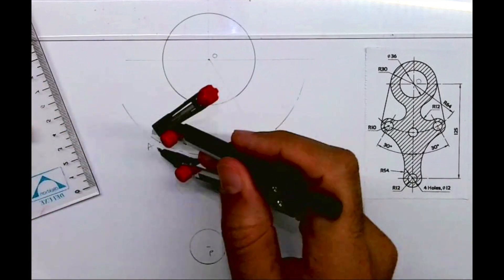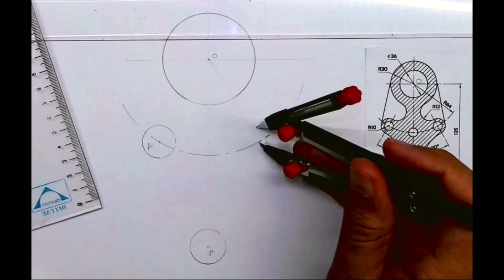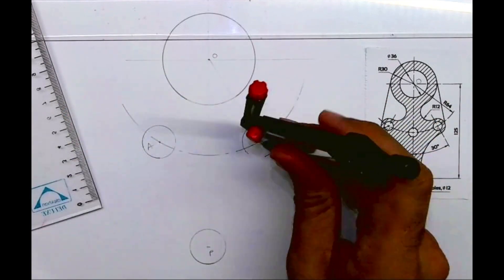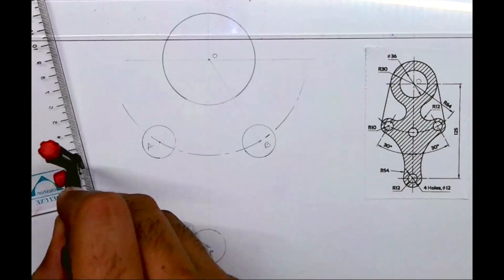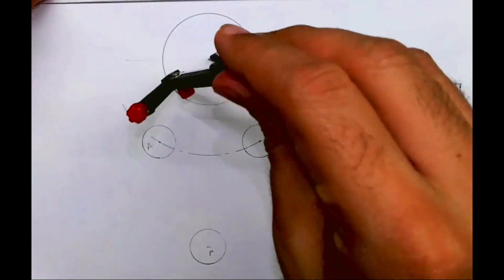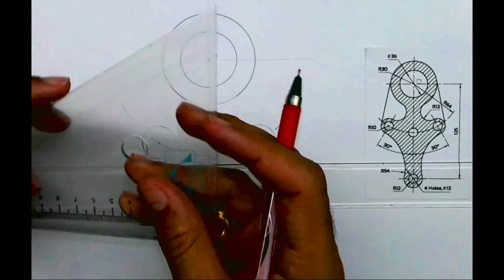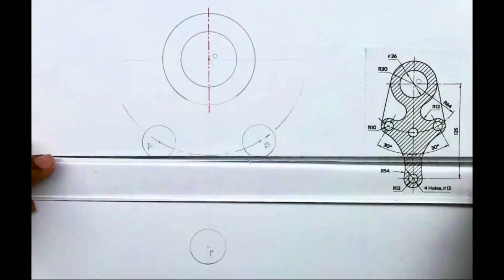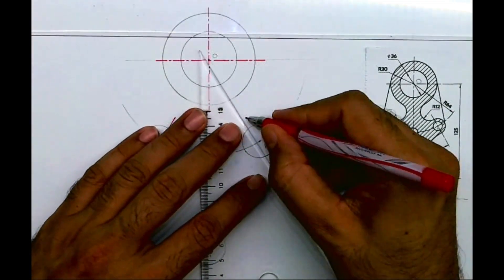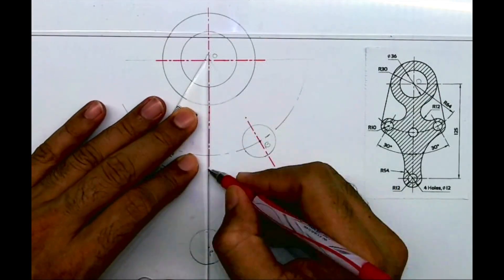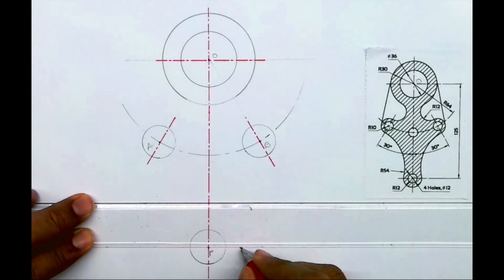Now from A and B we will draw radius 10. After this we will draw diameter 36. So from O we will draw the axis. See, after drawing all the axes as shown in the figure.